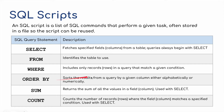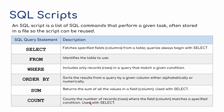ORDER BY is a way of sorting the results from a query by a given column, either alphabetically or numerically. SUM returns the sum of all the values in a field or column, used with SELECT — so SELECT SUM. And COUNT counts the number of records or rows where the fields match a specific condition, again used with SELECT.